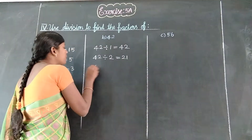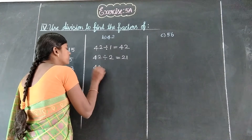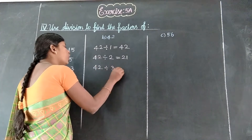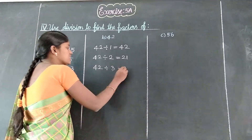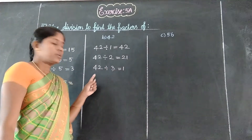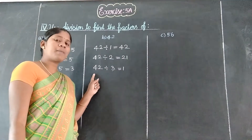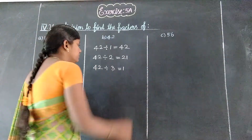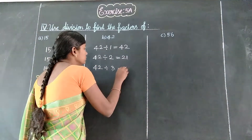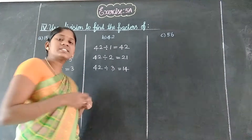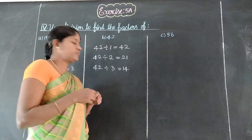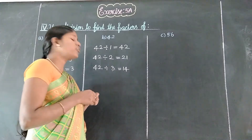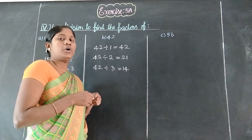Next, 3 table of 42 — yes. How many 3's? 14 threes are 42. So 42 divided by 3 equals 14. Next, 4 table of 42 — no.